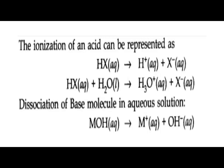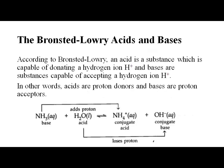The ionization of an acid can be represented as HX(aq) → H⁺ + X⁻, or HX + H₂O → H₃O⁺ + X⁻, because H⁺ does not exist independently. Dissociation of a base: MOH → M⁺ + OH⁻. This was according to Arrhenius theory.